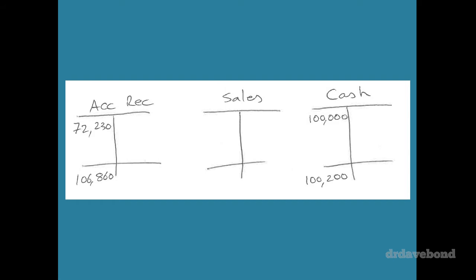And we need some T-accounts. Sales, accounts receivable. Is there anything else going on that we need? I don't think so. So let's imagine, you got sales total 301,330.